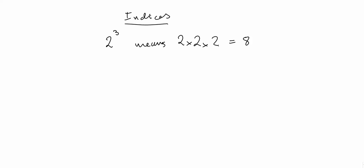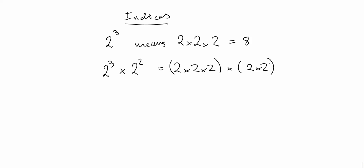We can multiply numbers involving indices like this. If we had 2 cubed times 2 squared, that would be 2 times 2 times 2, times 2 times 2. Altogether we have five 2's multiplied by each other, and we can write that as 2 to the power of 5. What we've done here is added the three 2's with the two 2's, so 2 to the power of 5 is 2 to the 3 plus 2.